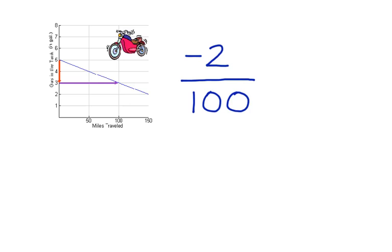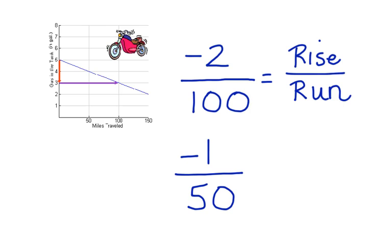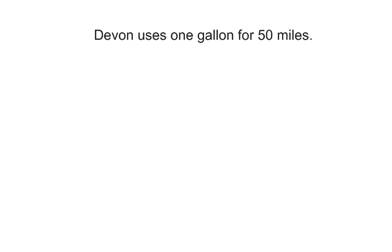Here's our relationship of rise to run. Now we can simplify this to figure out the actual slope, and the slope is the same as the rate of change. This simplifies to negative one over 50. But what does that mean exactly? It means that Devin uses one gallon of gasoline for every 50 miles that he travels. This is the rate of change with regard to gasoline.